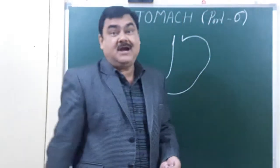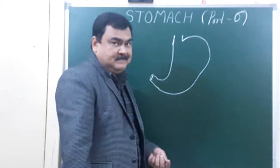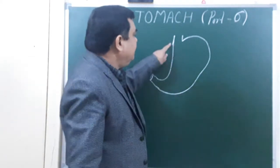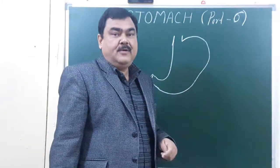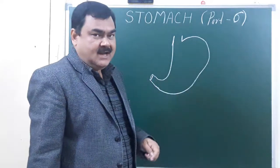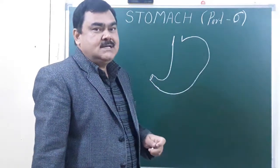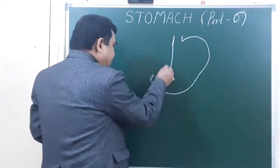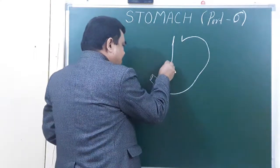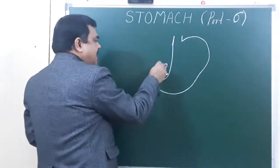Now let's discuss the arterial supply of the stomach. The stomach develops from the embryonic foregut, and the artery of the embryonic foregut is the celiac trunk. Here is the position of the celiac trunk. The celiac trunk gives three branches.